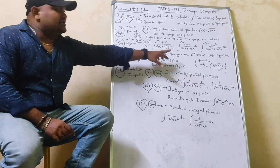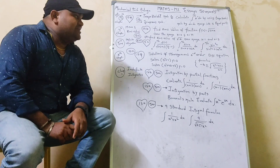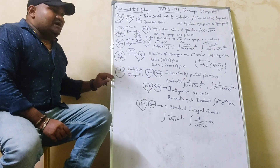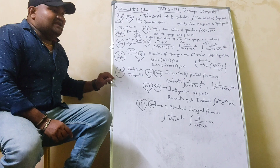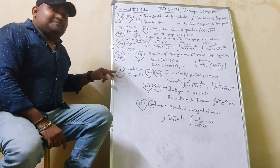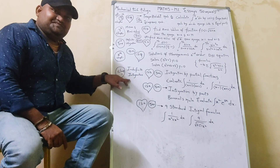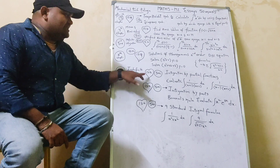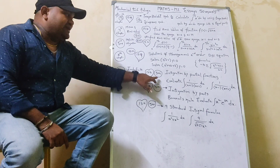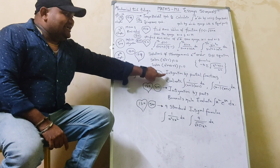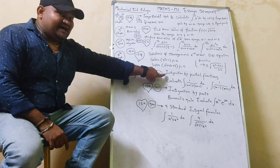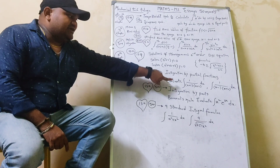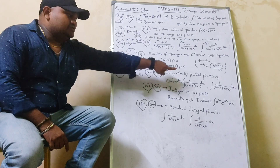This is the formula: minus b plus or minus root over b squared minus 4ac by 2a. Next, chapter 1 in 4th — chapter 1, Indefinite Integration. In the main exam, question 12b, 5 marks: integration by partial fractions. Evaluate: integral of 1 divided by (x+1)(x+2) dx.